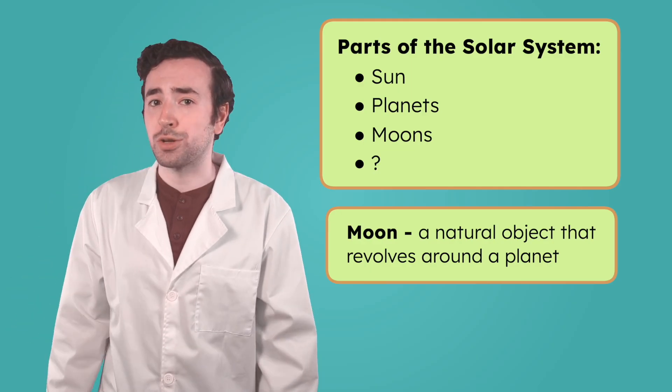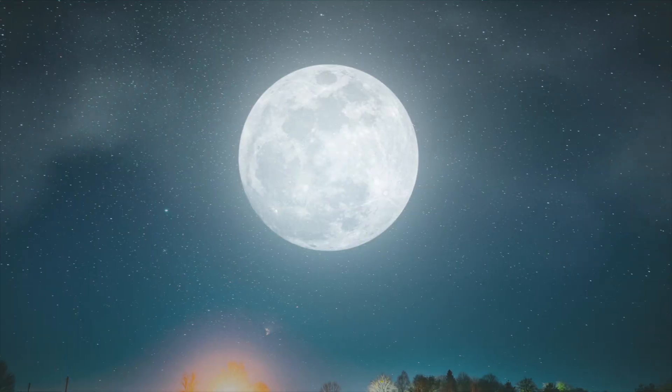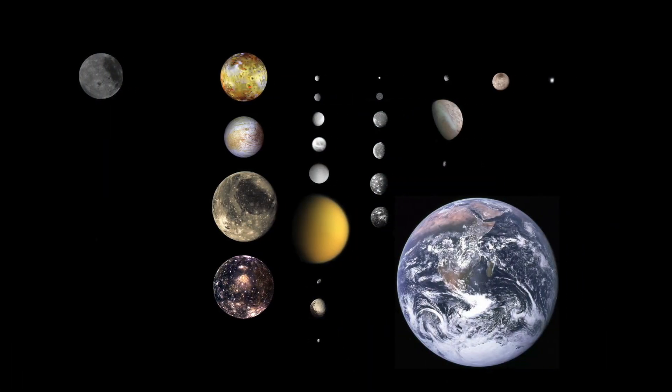In fact, most planets in our solar system have moons orbiting around them. Earth only has one moon, but some planets have a whole bunch. This picture shows a few of the moons in our solar system compared to Earth. Our moon is the one on the left. As you can see, some moons are much larger than ours, but others are much smaller. Moons come in many different shapes and sizes.